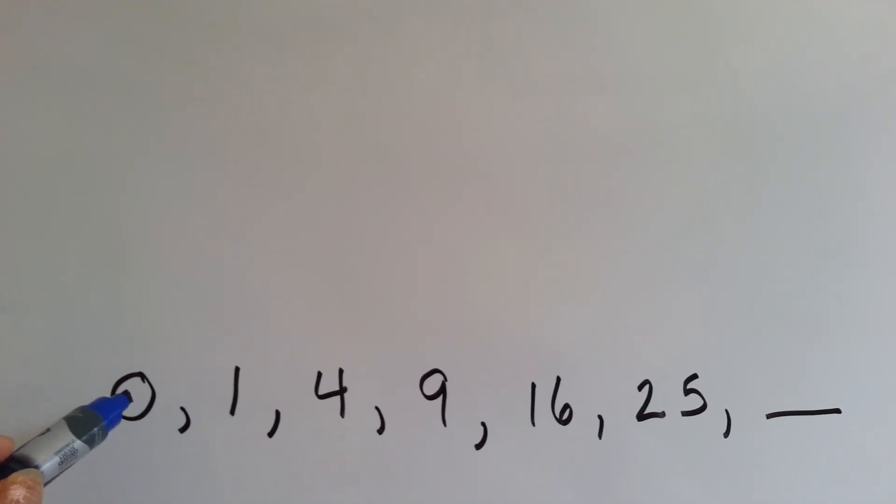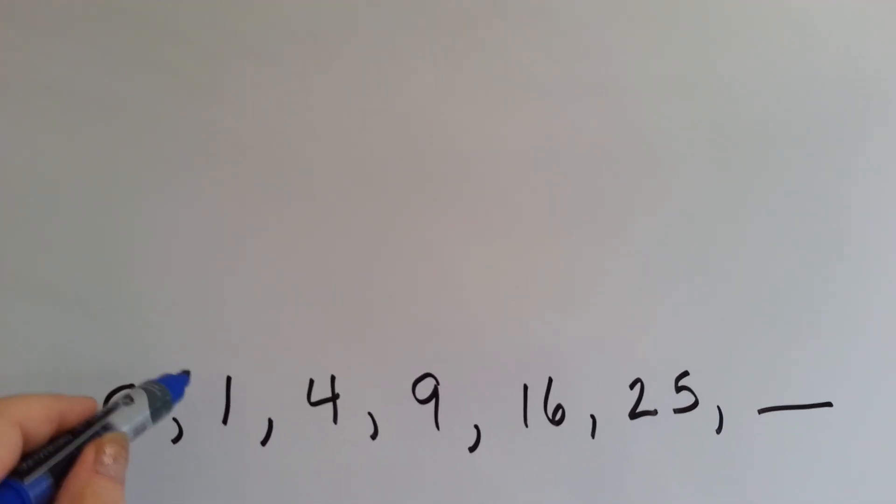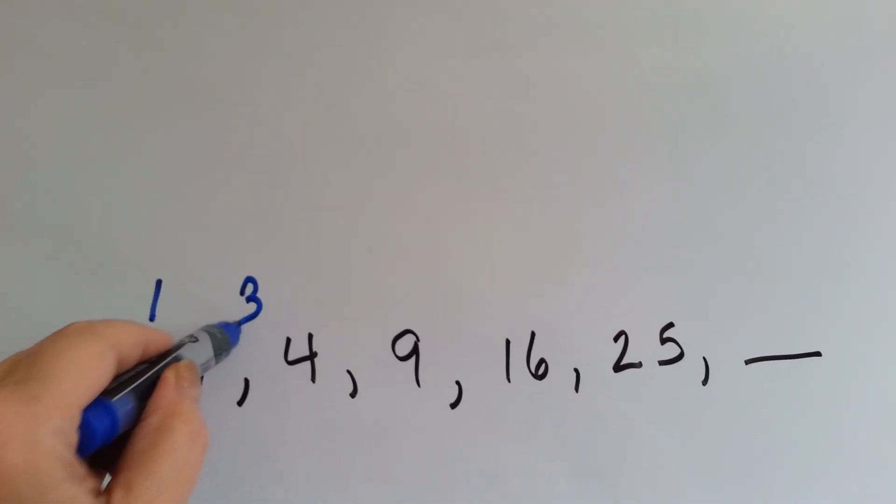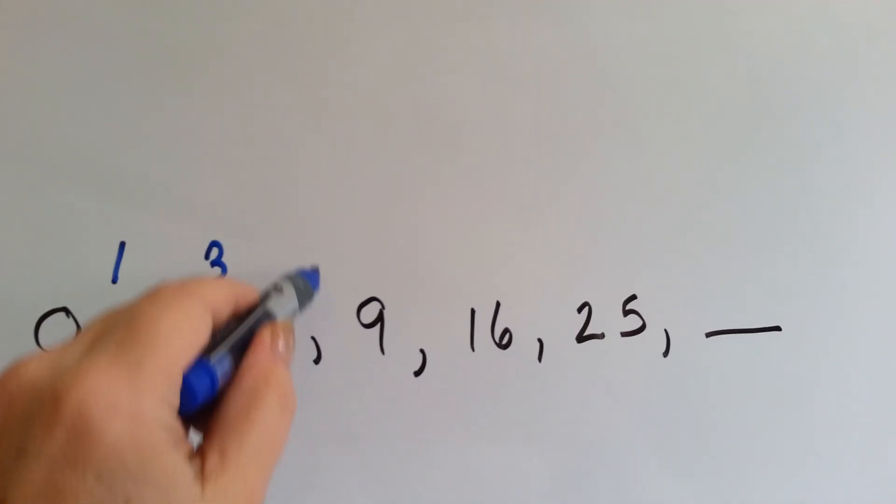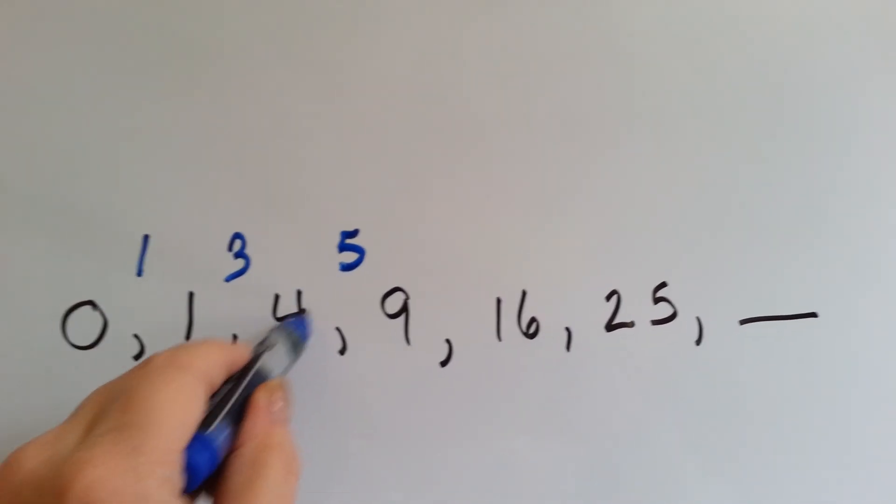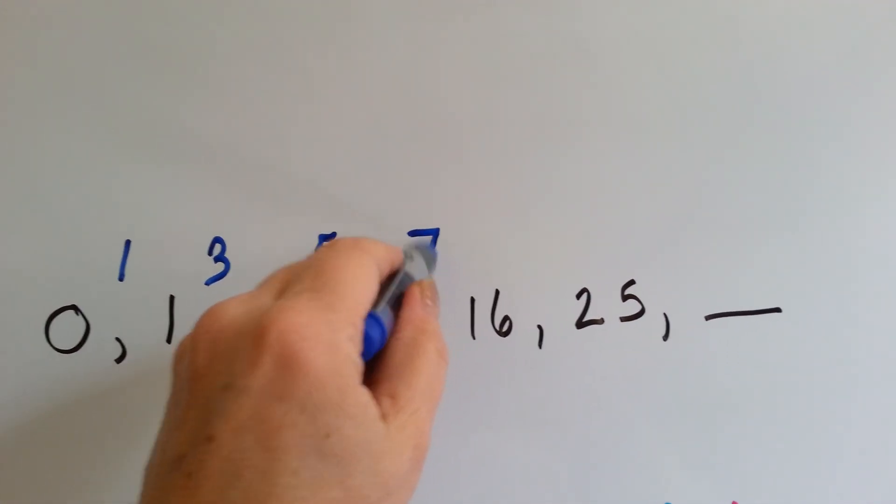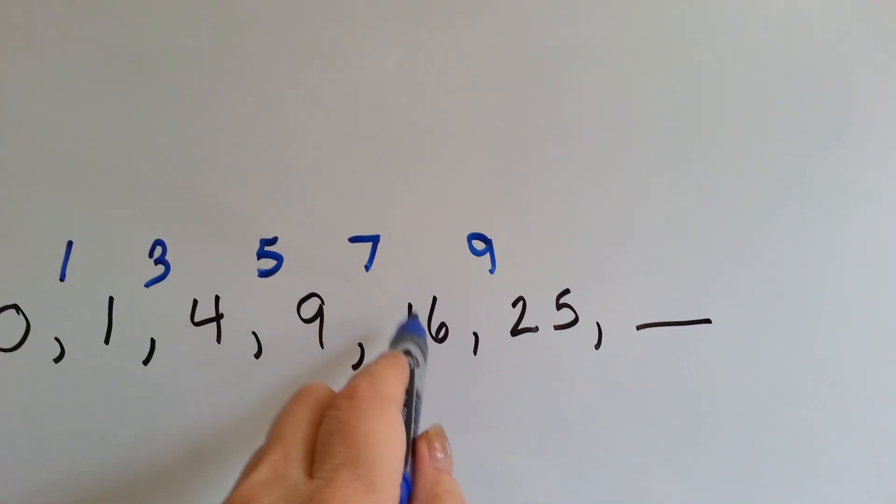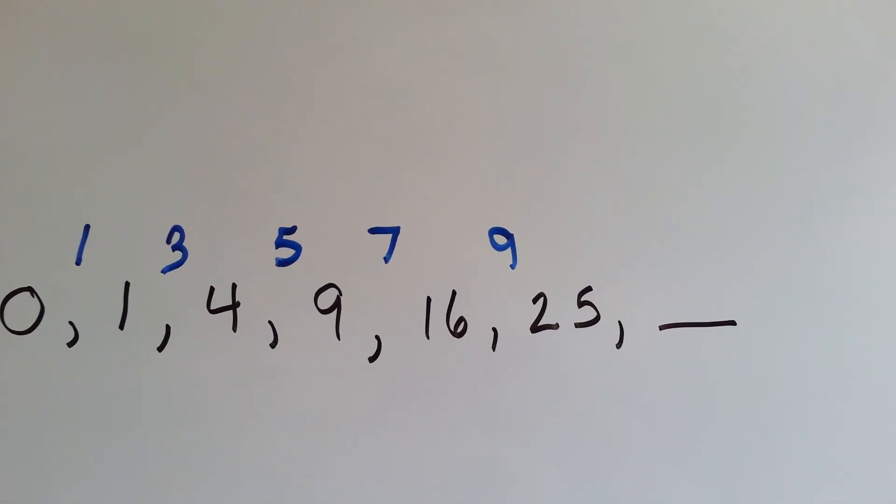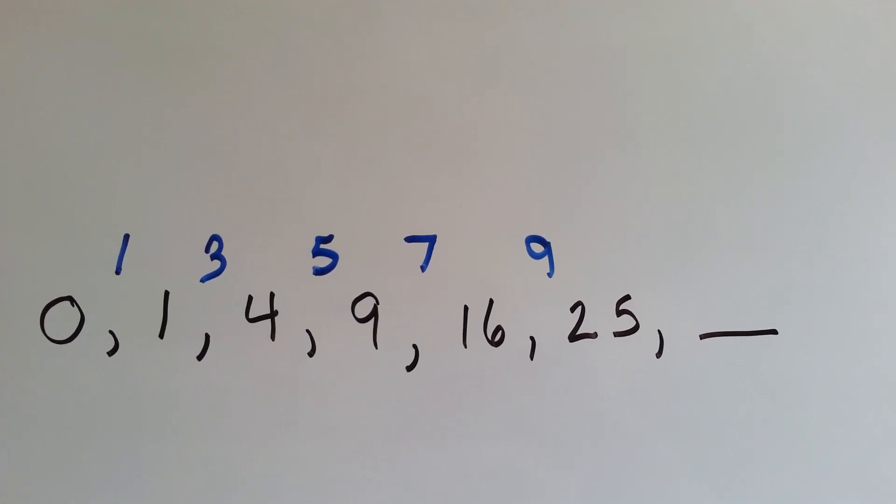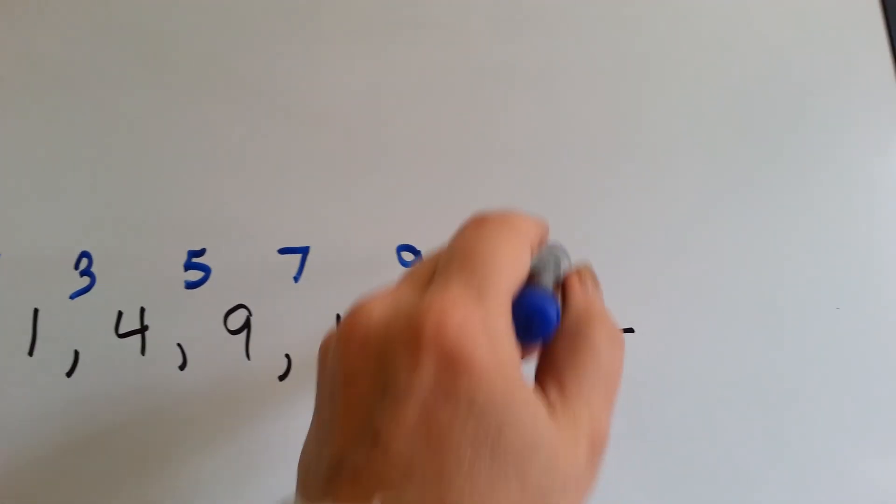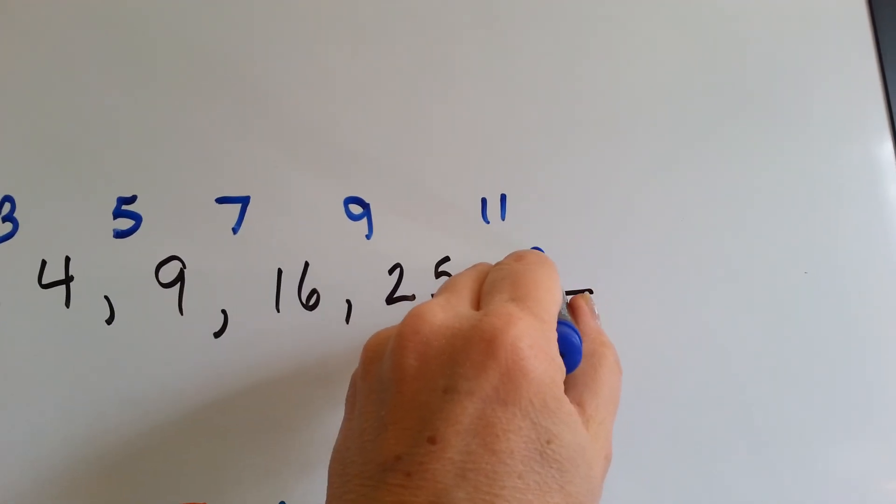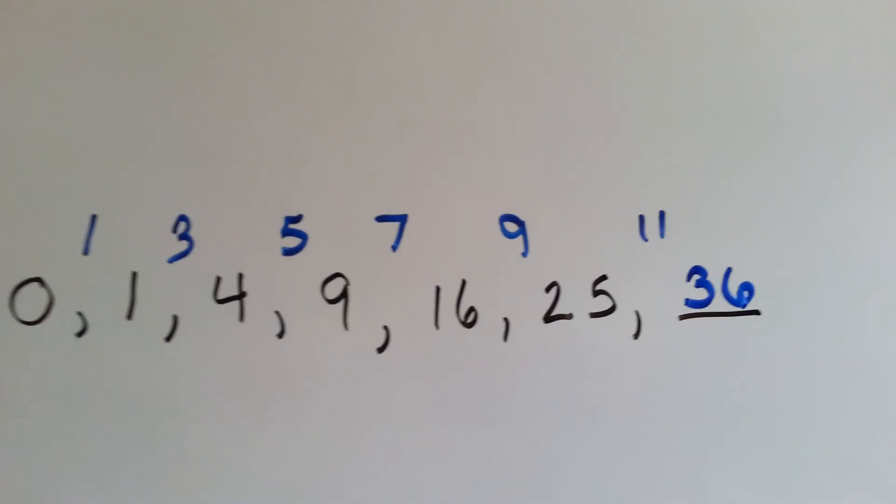The numbers are going up by odd numbers. 1, and 0 is 1. 1, 3, 1 and 3 is 4, 5, 4 and 5 is 9, 7. See, these are all the odd numbers. So, what would come next after this? 16 and 9 is 25. What would come here? What's the next odd number after 9? 11. So, what number would come here? If you said 36, you're right. See?